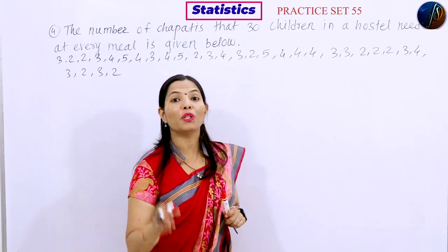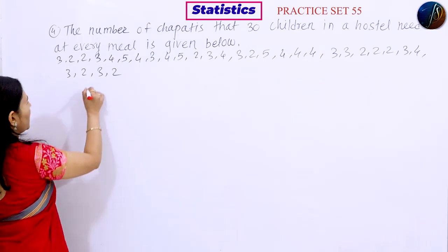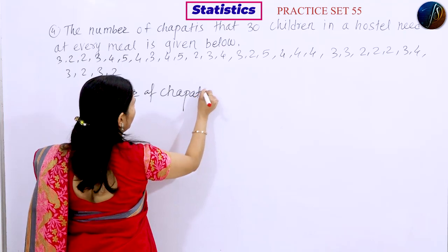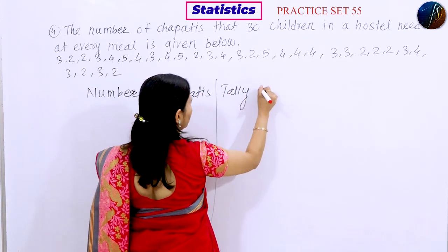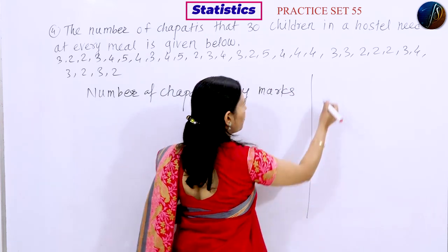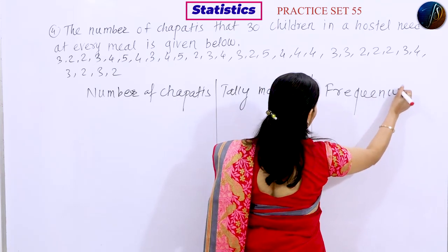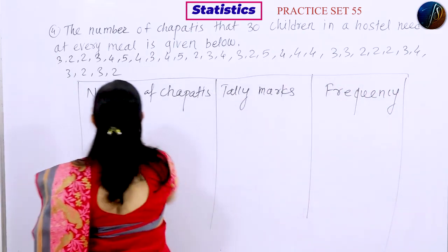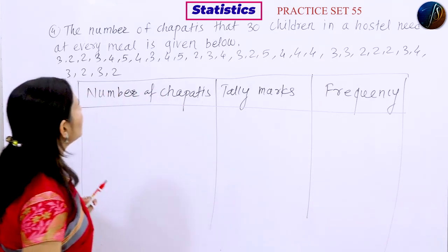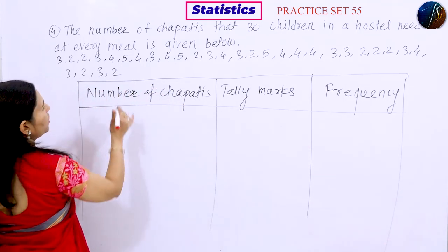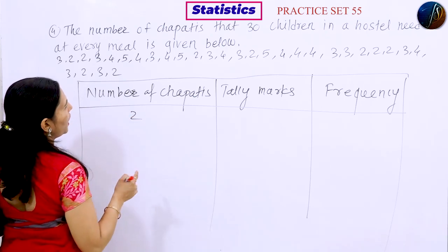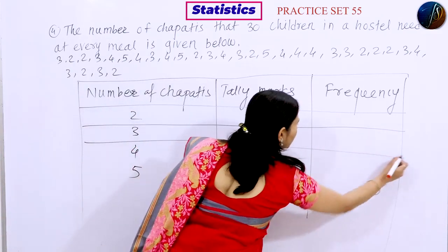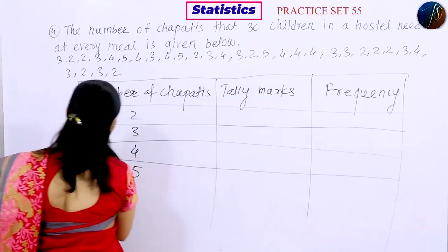We need to do this chart. The columns in the frequency table are: number of chapatis, tally marks, and frequency. We set up the chart using paper and begin filling in the values — starting with 2 chapatis and 5 chapatis.